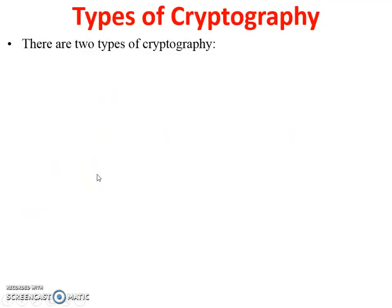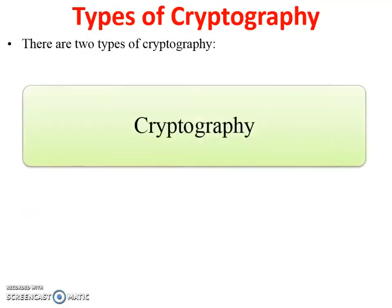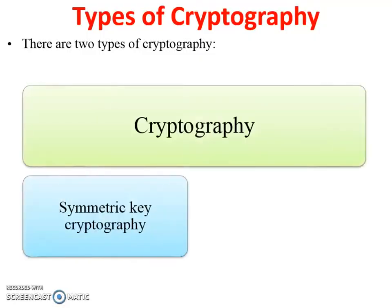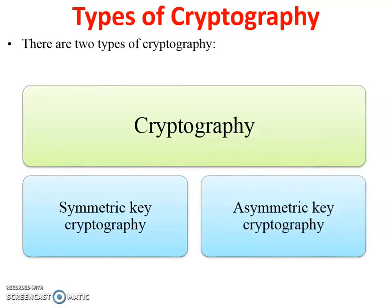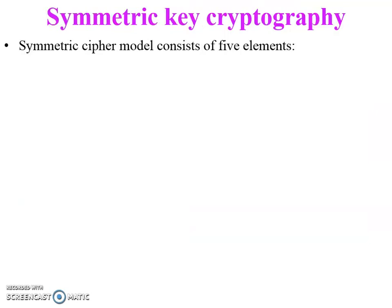There are two types of cryptography: one is symmetric key cryptography and second one is asymmetric key cryptography. In this video we are going to discuss symmetric key cryptography, also called the symmetric cipher model.